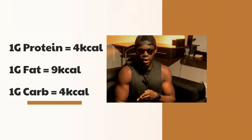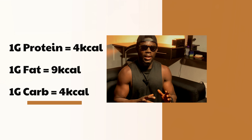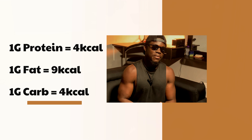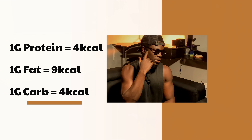To calculate calories, it's pretty much simple compared to calculating how much calories you need daily. We are going to use what they call the 4-9-4 method. It means every 1 gram of protein makes 4 calories, every 1 gram of fat makes 9 calories, and every 1 gram of carbohydrate makes 4 calories.